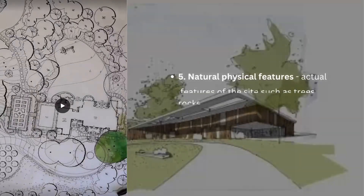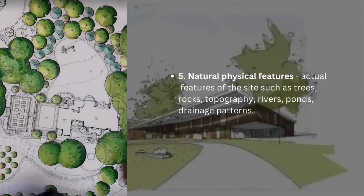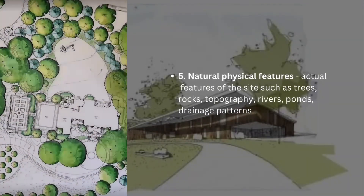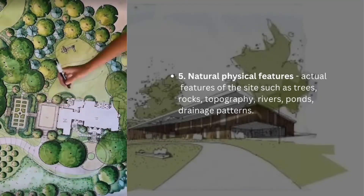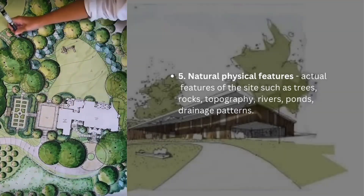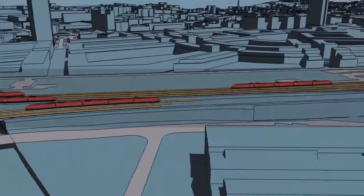Number five, natural physical features — actual features of the site such as trees, rocks, topography, rivers, ponds and drainage patterns. Number six, man-made features — walls, scale, materials, landscaping, setbacks and the surrounding vernacular of the existing buildings.